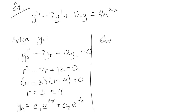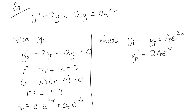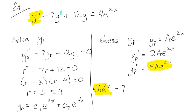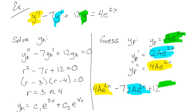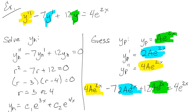Now I want to guess a particular solution that matches the right-hand side, so I guess Y_P = Ae^(2x). Taking derivatives: Y_P' = 2Ae^(2x) and Y_P'' = 4Ae^(2x). Plugging in: 4Ae^(2x) - 7·(2Ae^(2x)) + 12·(Ae^(2x)) = 4e^(2x).